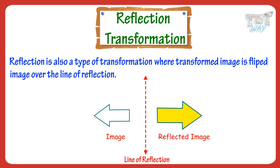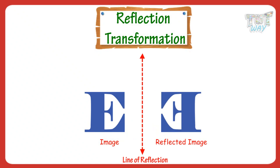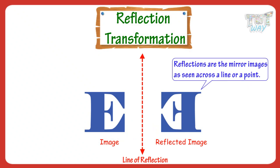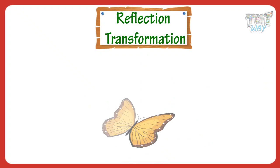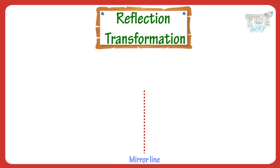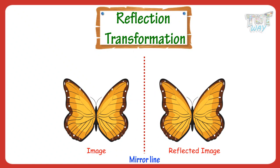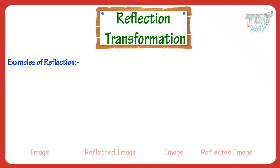Here, this is the flipped or reflected image of an arrow. Here we have an E letter, which is reflected. Reflections are the mirror images as seen across a line or a point. If you place a mirror on the line of symmetry of an object, you see the other half in its reflected image. And if you place a mirror on any edge of a 2D figure, you will get its reflected image. Here are more examples of reflected images.